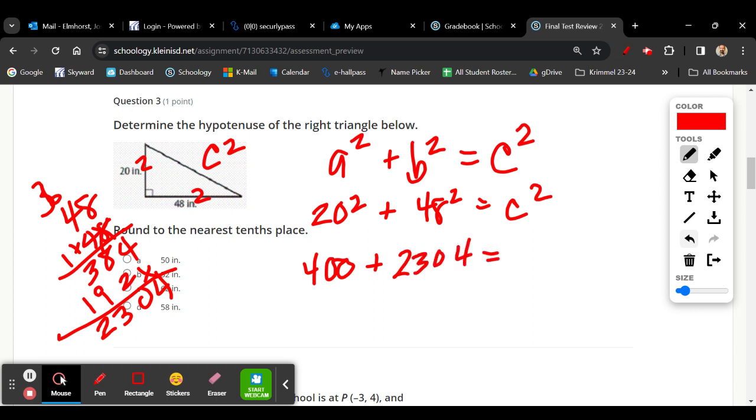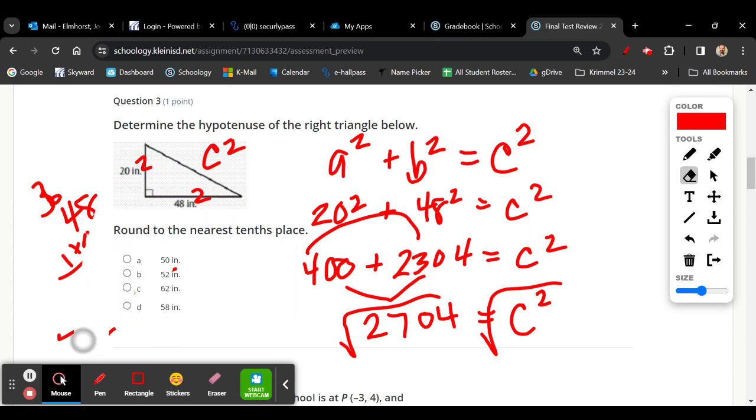So 2304, that's equal to c squared. We're going to put these two together. So 400 plus 300, we've got 2704. We need the square root of that to get the value of c. Now, if you're not sure which answer to go with,